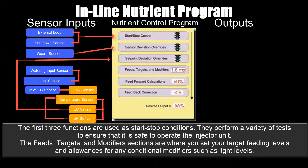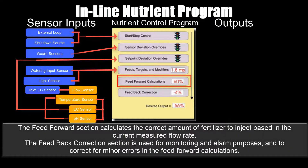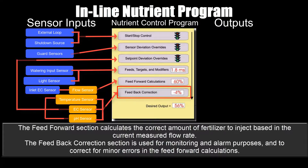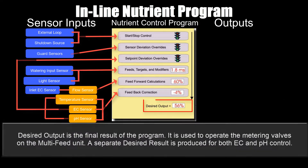The first three functions are used as start-stop conditions. They perform a variety of tests to ensure that it's safe to operate the injector unit. The feeds, targets, and modifier sections are where you set your target feeding levels and allowances for any conditional modifiers such as light levels. The feed forward section calculates the correct amount of fertilizer to inject based on the current measured flow rate. The feedback correction section is used for monitoring, alarm purposes, and correcting minor errors in the feed forward calculations. Desired output is the final result of the program, used to operate the metering valves on the multi-feed unit. A separate desired result is produced for both EC and pH control.